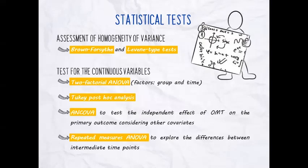Now let's go to the statistical tests, the inferential statistics. They assessed homogeneity of variance with two tests: the Brown-Forsythe and the Levene-type tests. Then they used different tests depending on the kind of variables. For continuous variables, they used the 2-factorial ANOVA — 2-factorial because they considered two factors: group and time. The Tukey post hoc analysis was implemented if results were significant, since ANOVA is a global test and doesn't tell where the difference lies. The last two tests for continuous variables were ANCOVA, to account for covariates, and repeated measures ANOVA, to explore differences between intermediate time points.